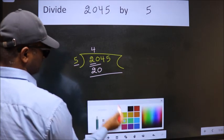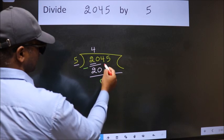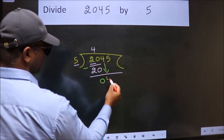Now we should subtract. We get 0. After this, bring down the beside number, so 4 down.